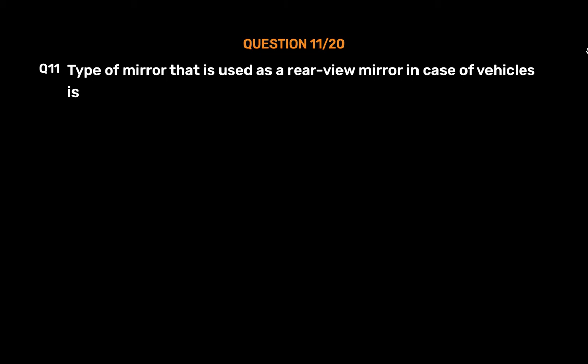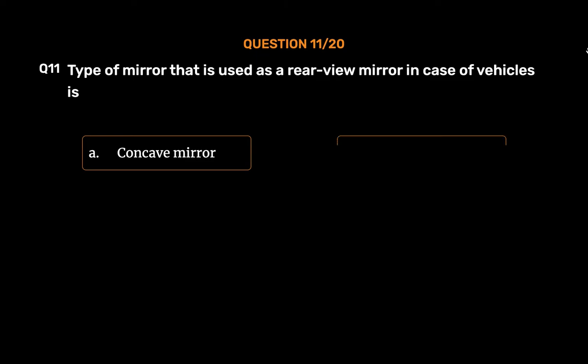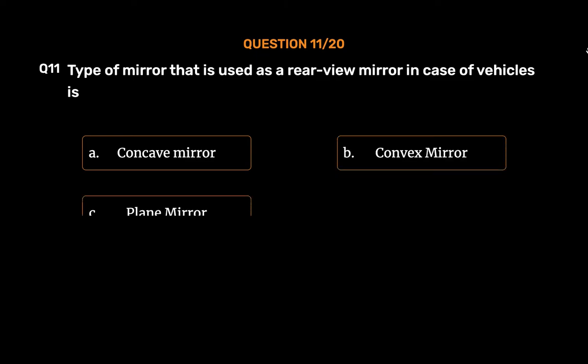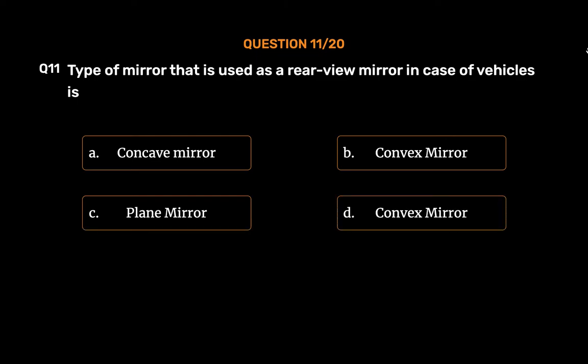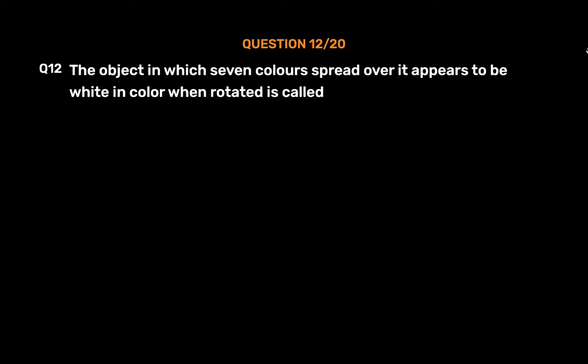Question No. 11: Type of mirror that is used as a rear view mirror in vehicles is — Option A: Concave Mirror, Option B: Convex Mirror, Option C: Plane Mirror, Option D: Convex Mirror. The correct answer is Option B: Convex Mirror.